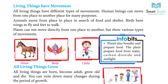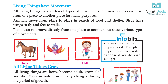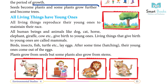Plants also breathe and prepare food from water, carbon dioxide, and sunlight. All living things grow — all living things are born, become adults, grow old, and die. You can note many changes during the period of growth. Seeds become plants, and some plants grow further and become trees.